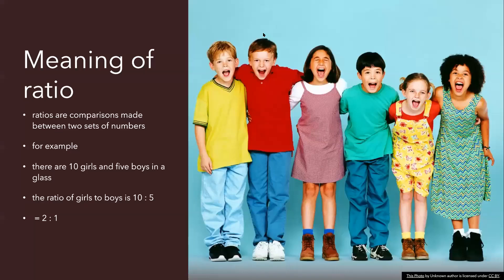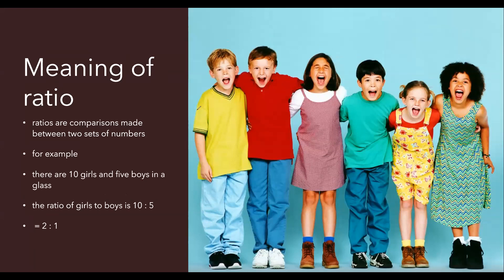Meaning of ratio. Let's first understand what is the meaning of ratio. When you have two things and you have to compare the two things, then we say we are finding out a ratio. For example, there are 10 girls and 5 boys in a class. So if I compare them and write them in the simplest form of ratio, then it is called a ratio.